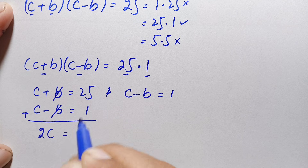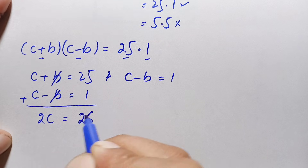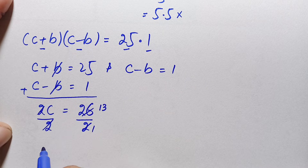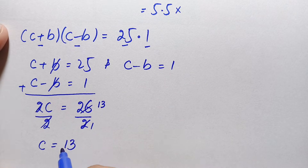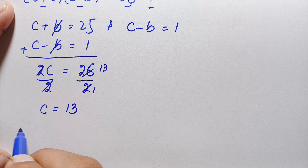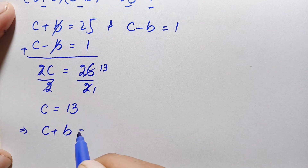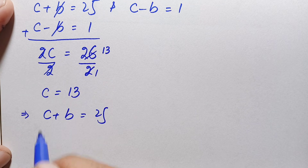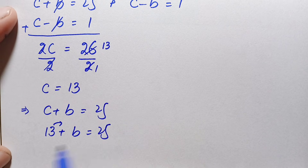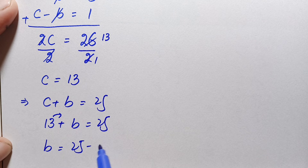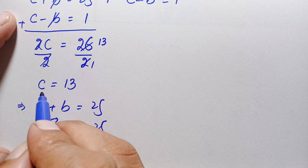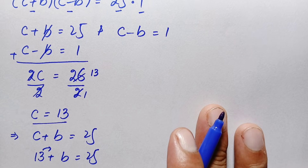Adding these two equations, the -b and +b cancel, giving 2c = 26. Dividing both sides by 2, we get c = 13. Now substituting c = 13 into the first equation, c + b = 25, we get 13 + b = 25, so b = 25 - 13 = 12. We now have the values of b = 12 and c = 13, with a = 5 already given.